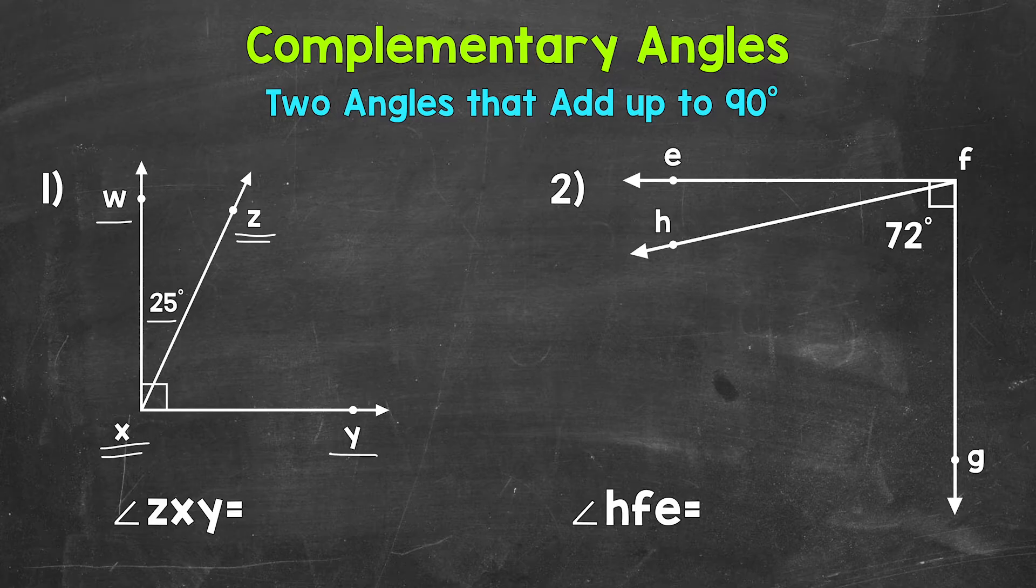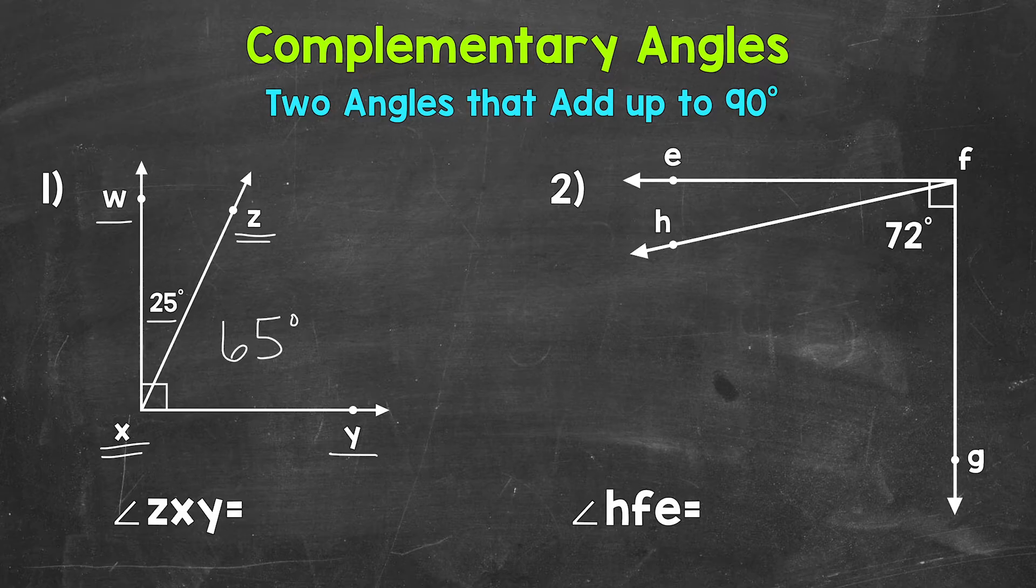Now we know that the two angles are complementary. They will equal 90 degrees. So we have 25 degrees plus what will give us that 90 degrees. You may be able to think through this and figure it out using mental math and think, well, 25 degrees plus what equals 90 degrees? Well, 25 plus 65, so our missing angle measure is going to be 65 degrees. Angle ZXY equals 65 degrees.